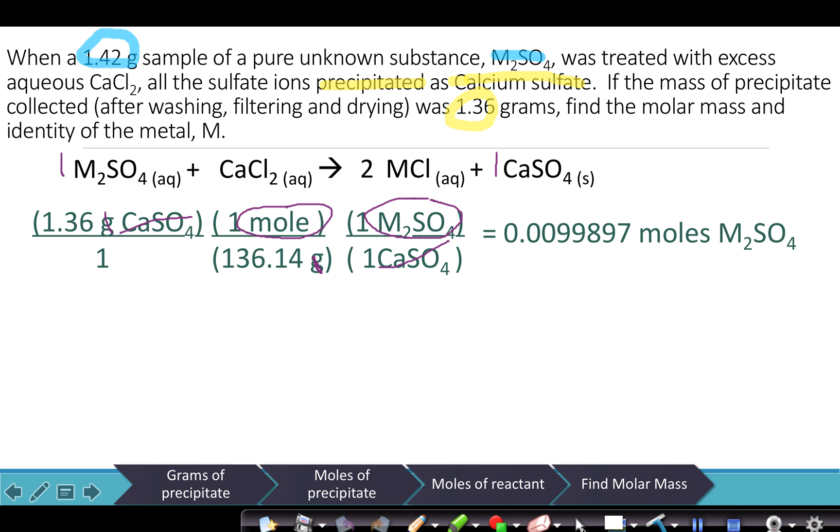When we do the math, you're going to do the 1.36 divided by 136.14, and your answer is going to come out to 0.0099897 moles of M₂SO₄. Now I didn't round this number yet because we're just going to be comparing it to try to find the identity for the molar mass, so this does not need to go to significant figures here.